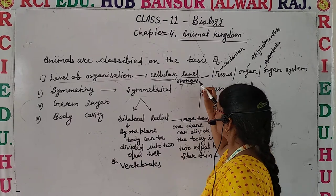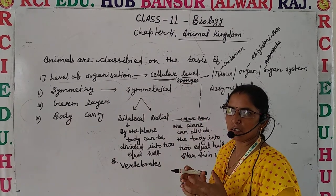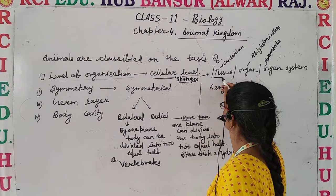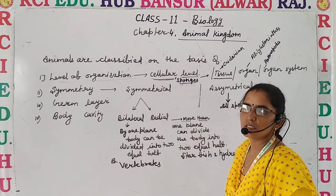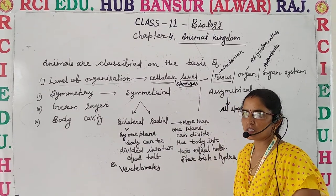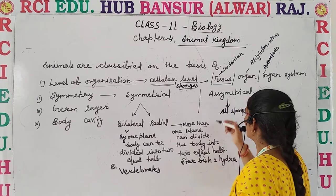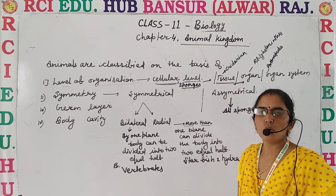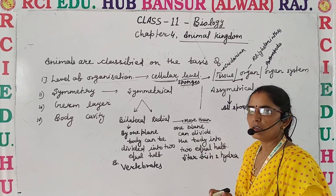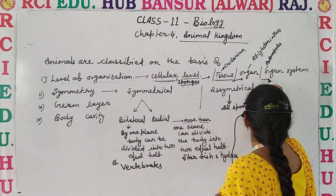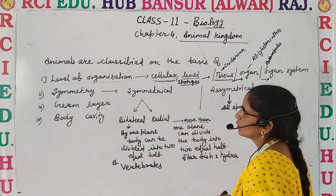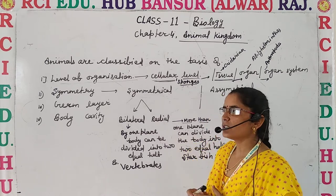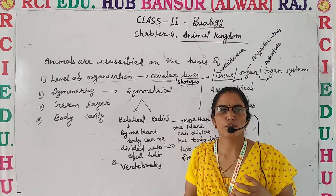After that, when these cells combine to perform a specific function, the level is known as tissue level of organization. Later on, these tissues combine to form organs and organs combine to form organ systems. Animals are classified on the basis of level of organization.